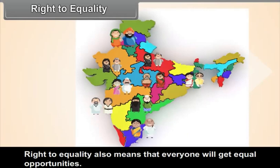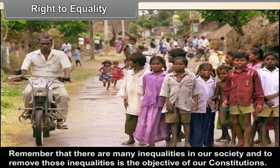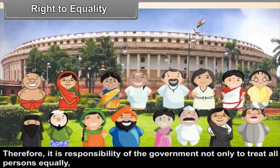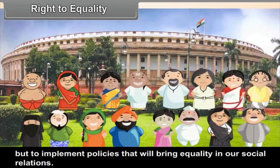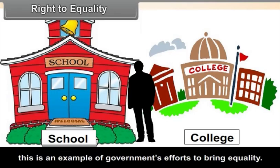The right to equality also means that everyone will get equal opportunities. Remember that there are many inequalities in our society, and to remove those inequalities is the objective of our Constitution. Therefore, it is the responsibility of the government not only to treat all persons equally but to implement policies that will bring equality in social relations. You may have heard about reservation of seats in school and college admissions for women or persons of weaker sections — this is an example of the government's efforts to bring equality.